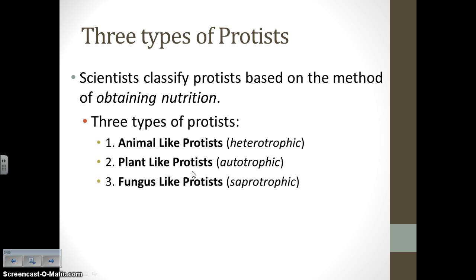Scientists classify protists based on how they obtain their nutrition. Using that method, there are three types of protists: animal-like protists, which are heterotrophic; plant-like protists, which are autotrophic; and fungus-like protists, which are saprotrophic — in other words, decomposers. Since protists were our original eukaryotes, they are the ancestors of animals, plants, and fungi, so it makes sense that there are three types of protists.